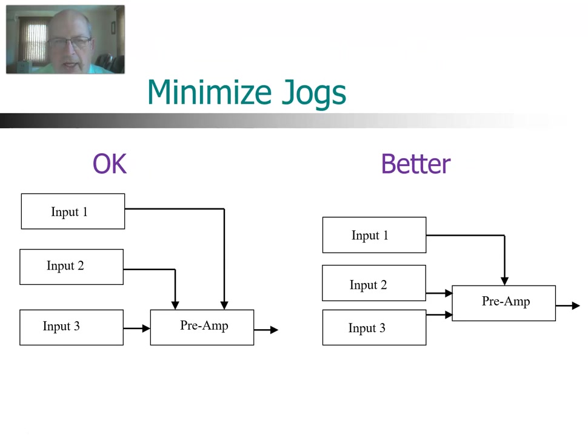And another thing you can do is to minimize jogs. The block diagram on the left-hand side, technically correct. But if you redraw it a little bit differently by sliding that input 2 down a little bit, we can get those signal flow lines to directly enter the preamp without a jog. So that's a little bit better option for you. It makes it easier to follow that signal flow line when you don't have those jogs. That may not be readily apparent here, but in some more complicated diagrams, that will become important. So again, try to minimize your jogs. And the one on the right-hand side, you have fewer jogs. So that's kind of the basics of block diagrams.